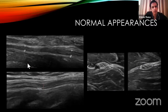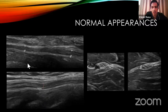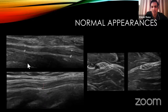A normal ulnar nerve shows parallel fiber appearance and mild echogenicity in longitudinal section, and a honeycomb cross-sectional appearance. We assess for uniform caliber throughout in longitudinal section and no significant loss of echogenicity in transverse section. Around the cubital tunnel, the nerve can appear slightly more rounded and slightly more hypoechoic due to the overlying retinaculum and angulation — this is within normal range but should be correlated with symptoms if found.